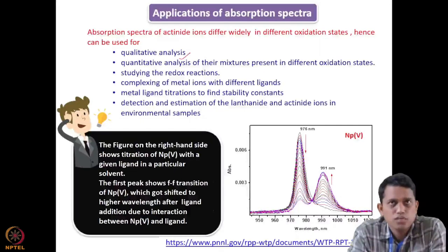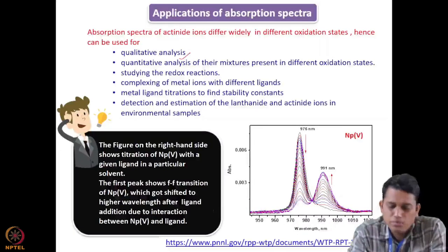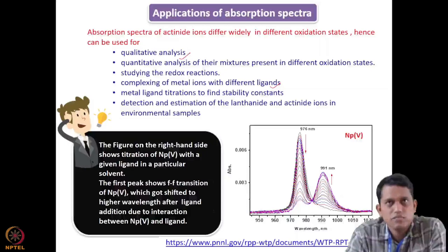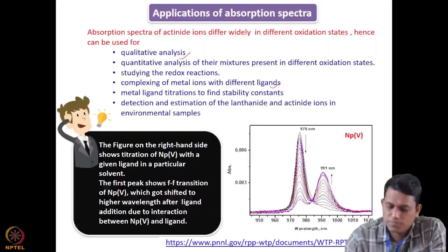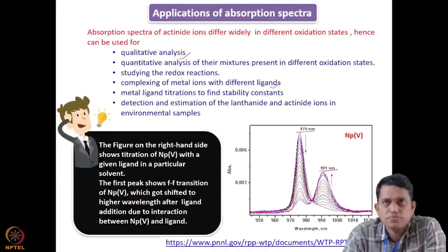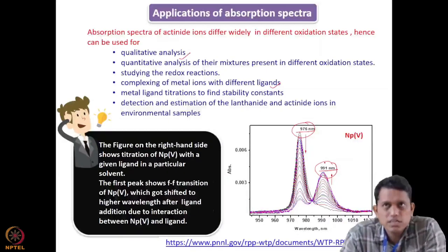I have given you some examples of redox reactions, where I have shown that one can study the kinetics of redox reactions using UV spectroscopy, and also the complexation of metal ions using different ligands. As we have seen in the previous slides, once these ions form a complex with different ligands under a given set of conditions, their absorption spectra will change. Based on that change, if you do a titration — as I have shown — starting with some concentration of neptunium and titrating with a ligand, there is a peak shift from around 976 to 991 nm.